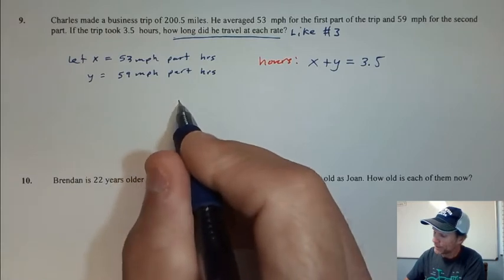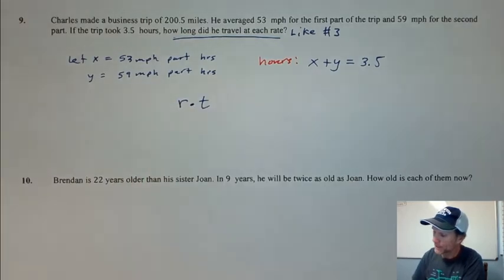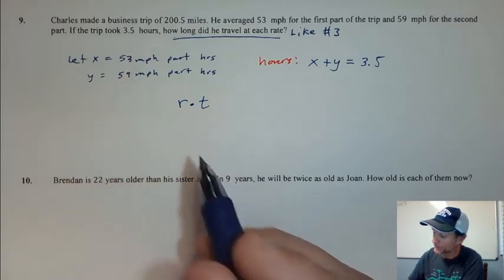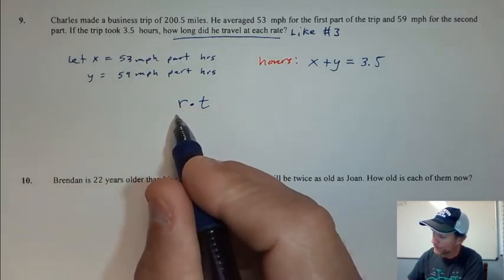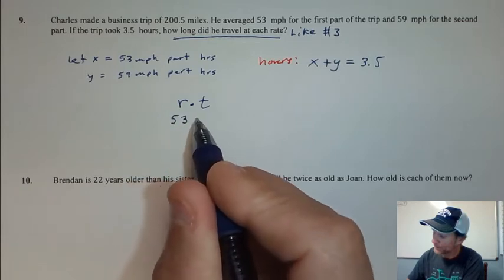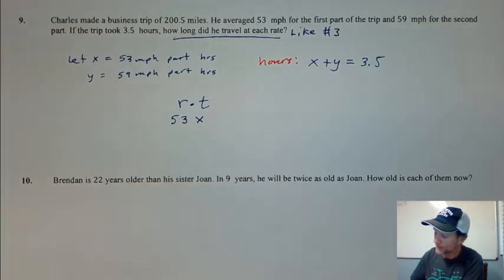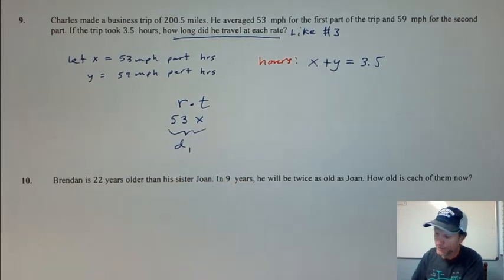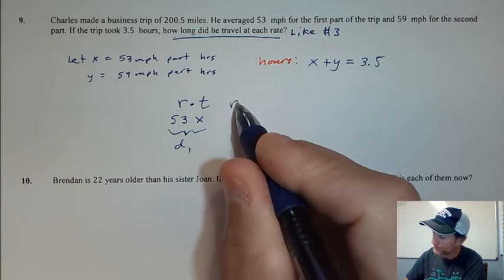Now, thinking back to rate times time, I know that for the first part of the trip, or this 53 miles per hour, the rate is 53 and the time is x. So that is equal to the distance.